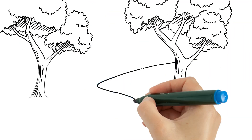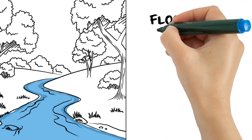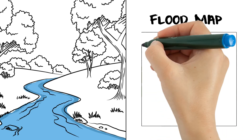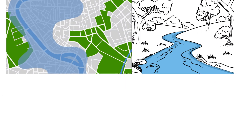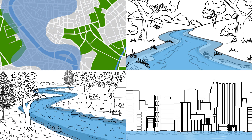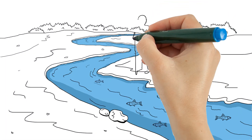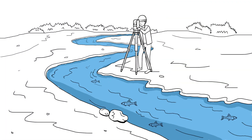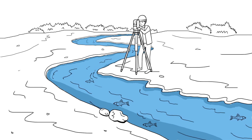Rivers flow through the heart of many communities in Alberta and flood maps are important tools that help us understand and manage flood risks. Flood maps identify where water will flow during a flood and what land could be flooded for different sized floods. Making accurate flood maps requires detailed river and floodplain information and a lot of science and engineering.